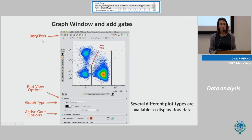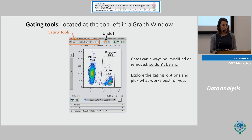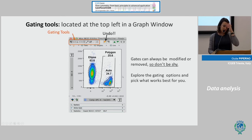In the upper part of this window you have the gating tools — how to create gates — the plot view options, the graph type, and active options. There are several types of plots you can create in FlowJo, ranging from pseudo-color contour and density to histogram. Try them and find the one that best represents your data. The gating tools allow you to choose rectangle, ellipse, polygon, or auto. Auto means the software automatically recognizes the most dense population. You can also undo, so please try and modify your gates — don't be shy. Explore the gating options and find the best one that represents your data.